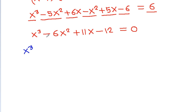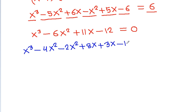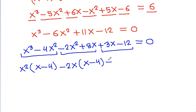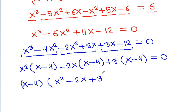From x³ - 6x² + 11x - 12 = 0, with (x-4) as a factor, we split: x²(x-4) minus 2x(x-4) plus 3(x-4) equals 0. From here we can take (x-4) common.